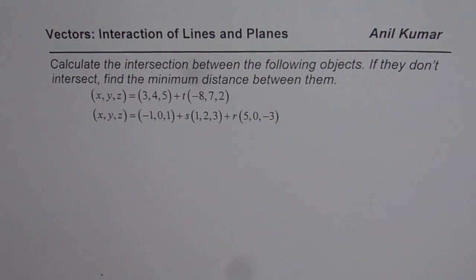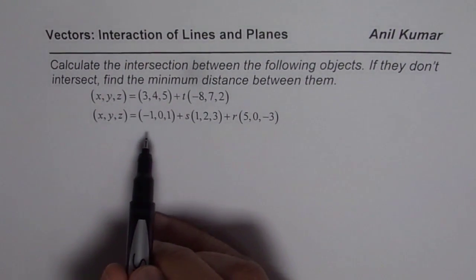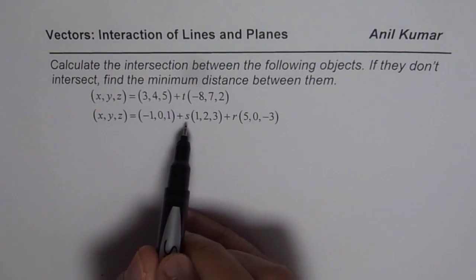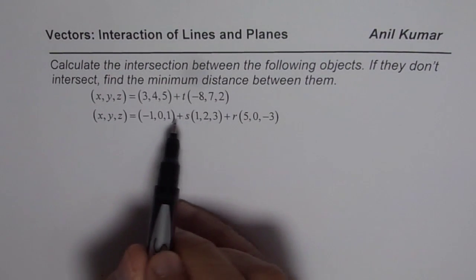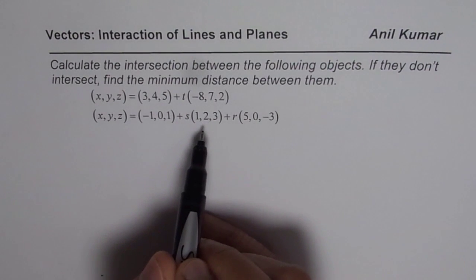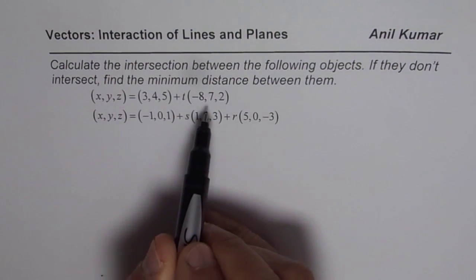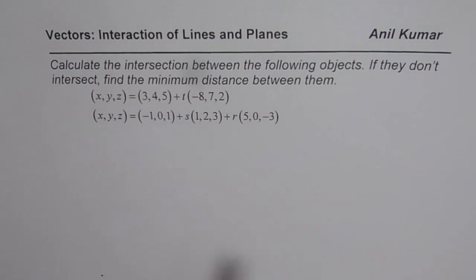You can pause the video and answer the question before looking at my solution. The first object has one parameter — that is a line. The second has two parameters — that is a plane. We need to find the intersection between them, and if they don't intersect, the distance between them.